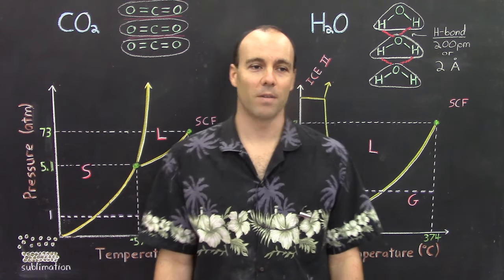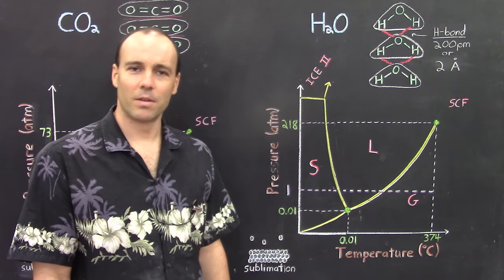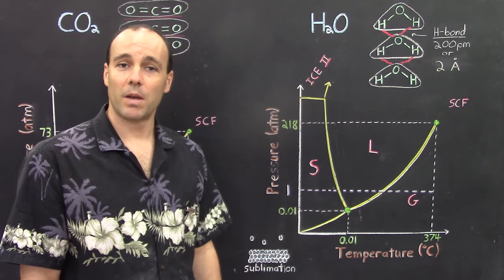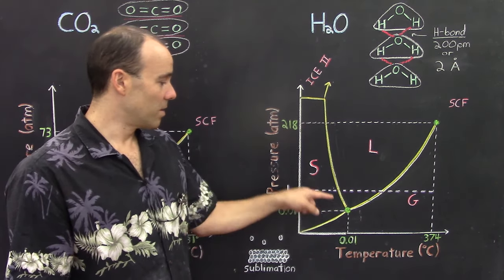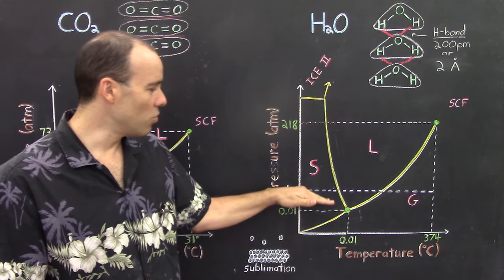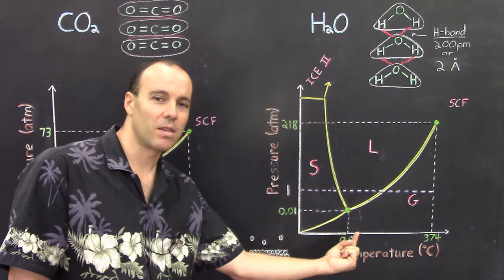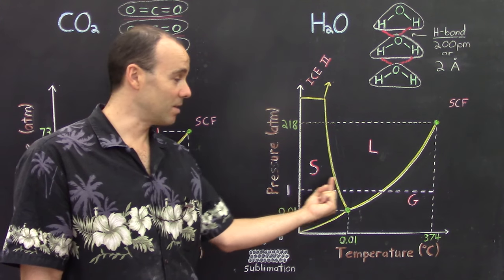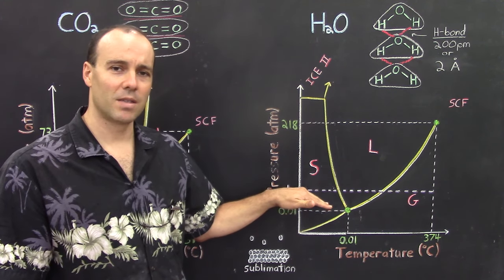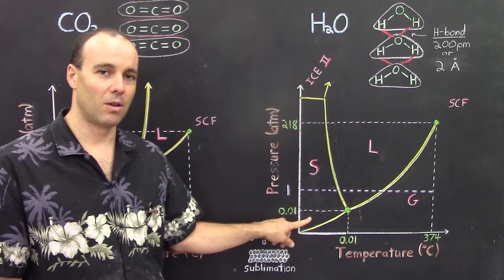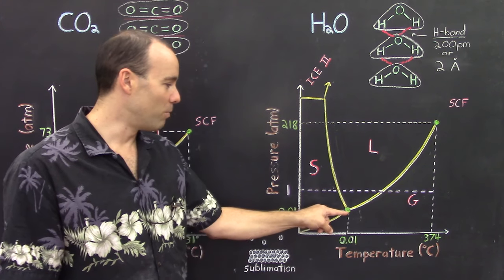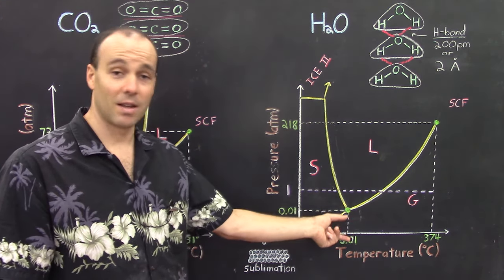Now let's take a look at the phase diagram for water. Pretty similar in several respects — you have your solid, liquid, and gas phases, and your supercritical fluid region. But a couple of important differences: the first is the location of the triple point. For water, the triple point is below one atmosphere. So under normal atmospheric conditions, we do not see sublimation occur — we see the solid melting into liquid and then the liquid boiling into gas. If you wanted to see sublimation occur for water, the pressure would have to be below 0.1 atmosphere. The triple point is actually very close to the x-axis — it was just elevated so you could see it.